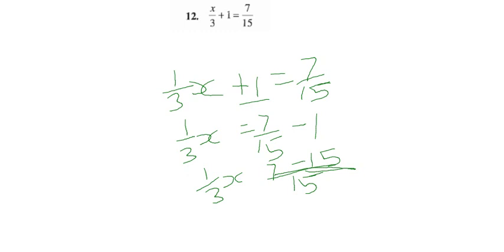If you put 1 with denominator 15, you have to multiply by 15. So we're writing 1 as 15/15. That's why we get (7-15)/15.